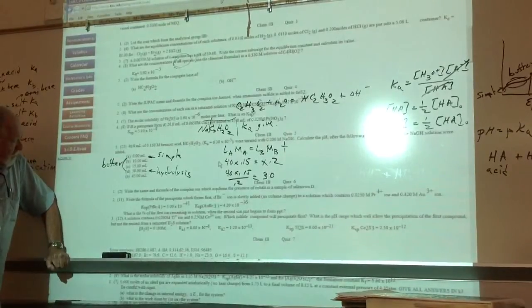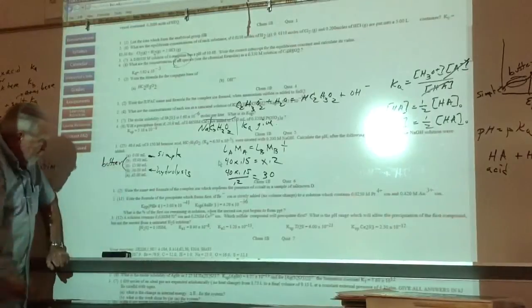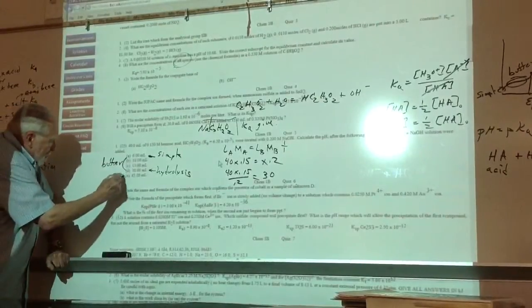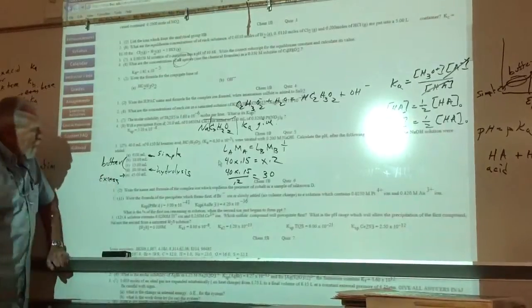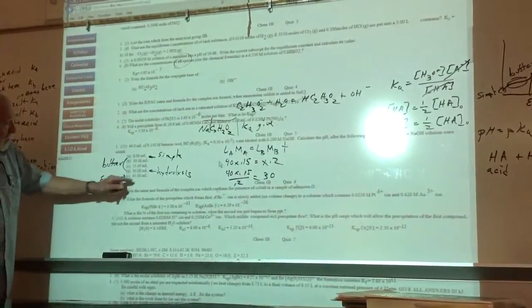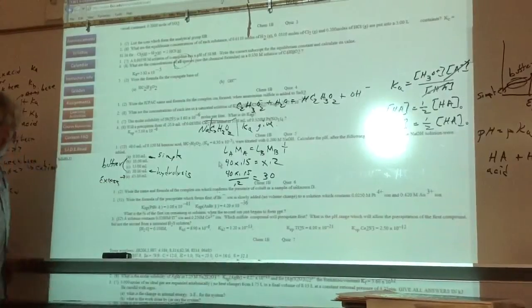But it's still only one or two points, depending on how generous that's there. Okay? But those are buffer problems. In between, those two are the buffer solutions. What's this one? Excess. And since you're adding, what, NaOH, you have 15 milliliters excess.